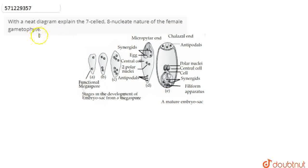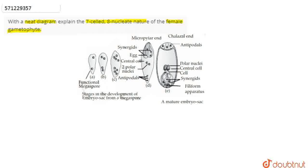In this question we are asked that with a neat diagram, explain the 7-celled, 8-nucleate nature of the female gametophyte. So basically we have to explain why the female gametophyte is 7-celled and 8-nucleate.